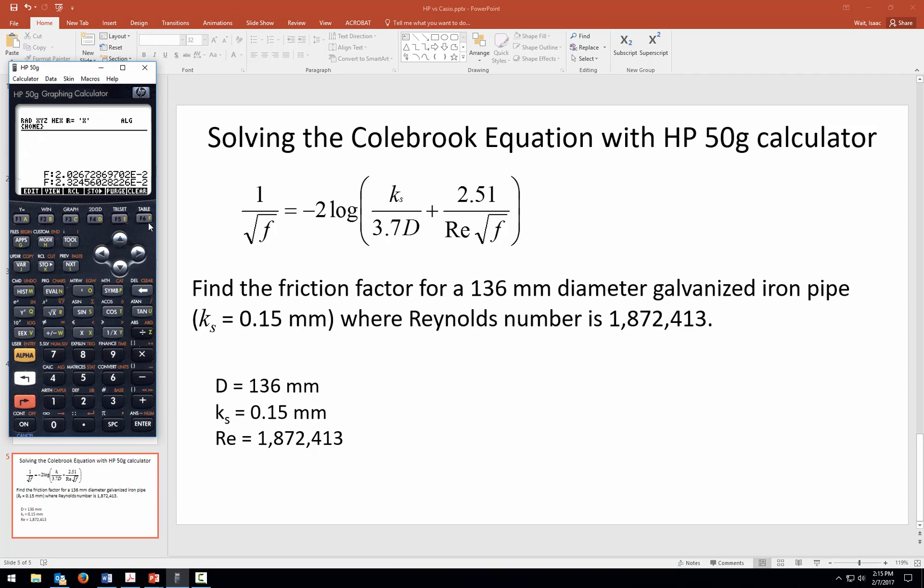And also, if I go to Enter, it has the values in the stack. So this is the first value that I solved for, 0.0203. And then the second one, when I changed the k_s, is loaded here as the second solution.